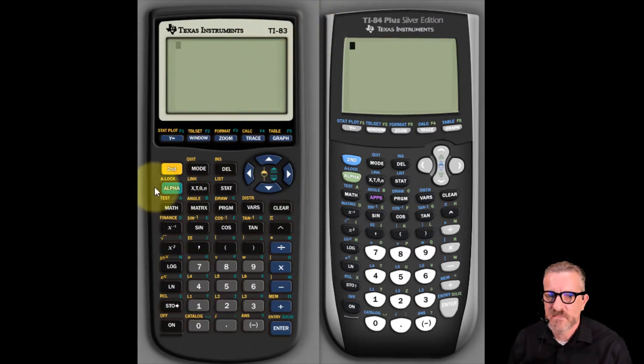We do second, so we push this yellow key - it's usually yellow, some of these are different color key combinations nowadays - and then we go down and we find the L-N. And you'll see that because we hit the second, it's actually the second capability of the key.